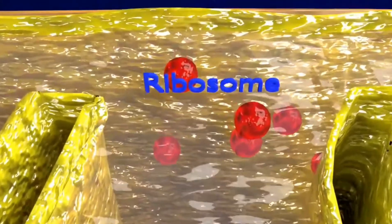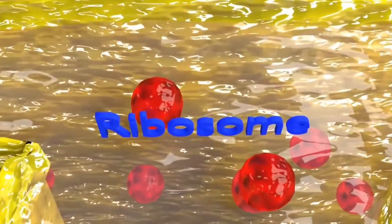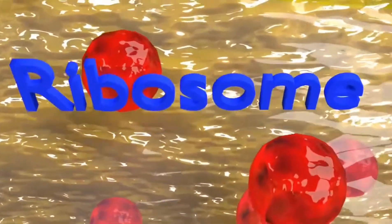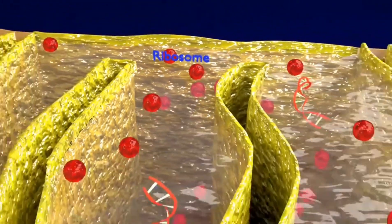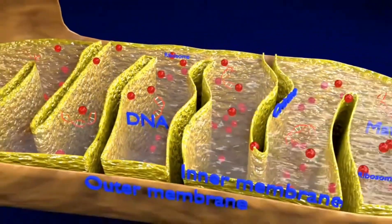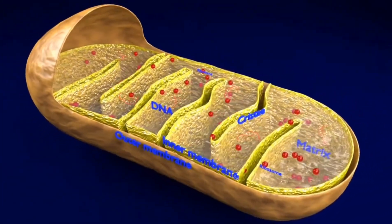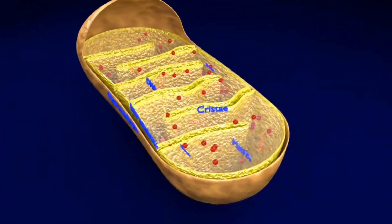The matrix contains the enzymes of the Krebs or TCA and fatty acid cycles alongside DNA, RNA, ribosomes and calcium granules.